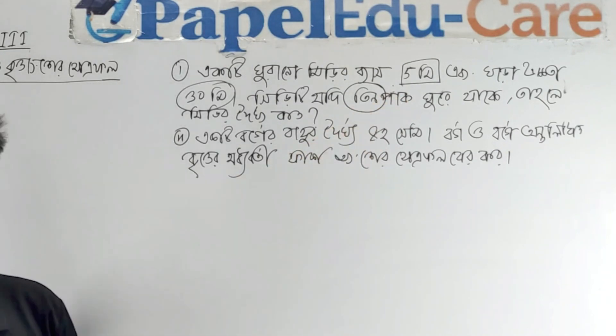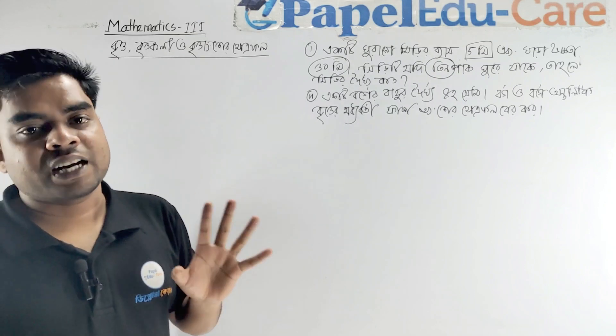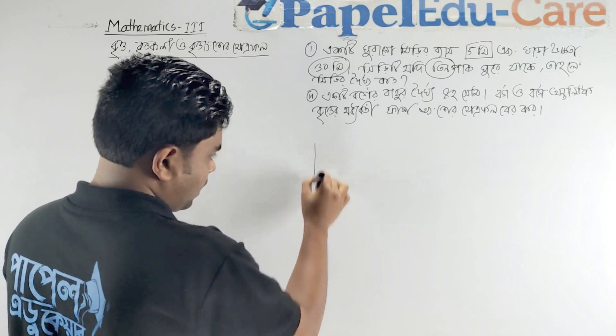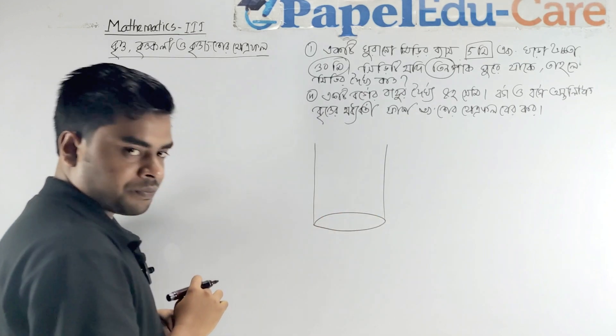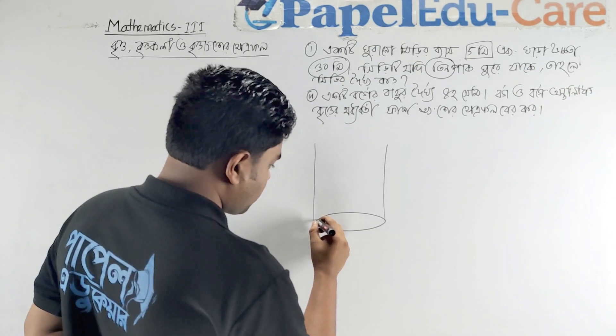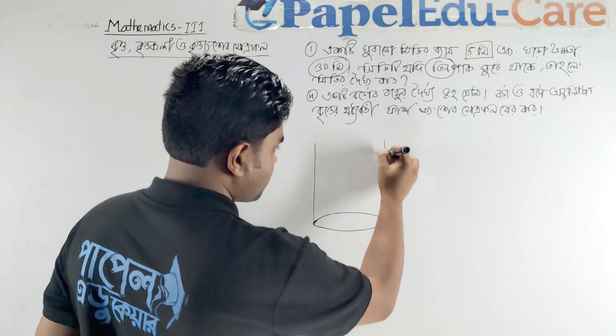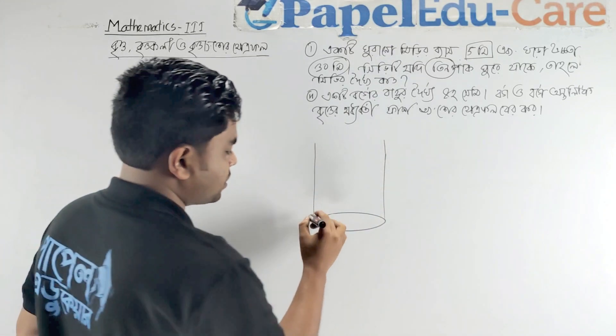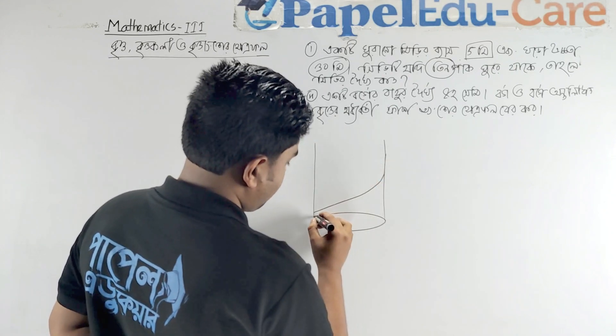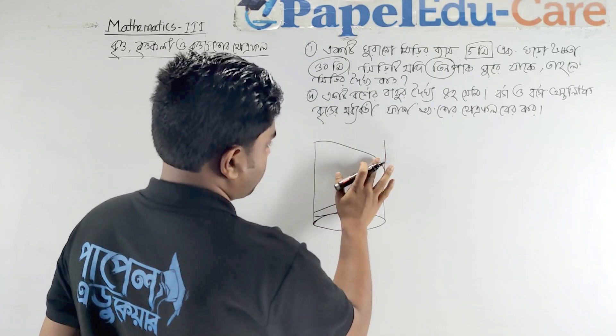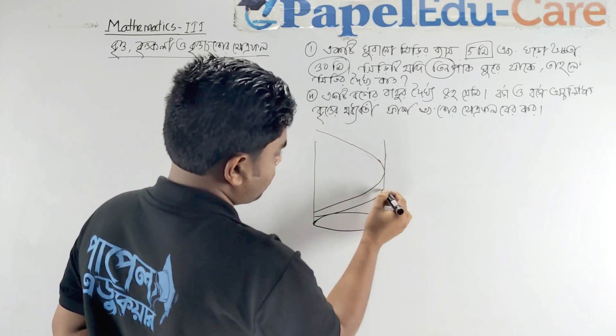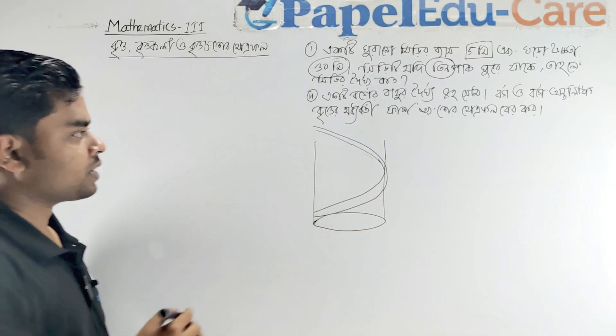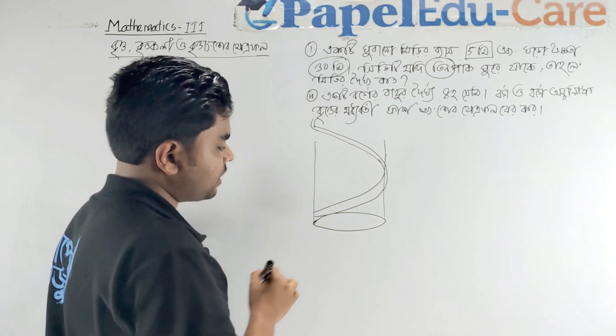The problem describes a silo structure where the base has a pass meter measurement. There's a 30 meter section, and we need to find the total distance. Let's set up the problem with the given measurements and establish the key points and angles.